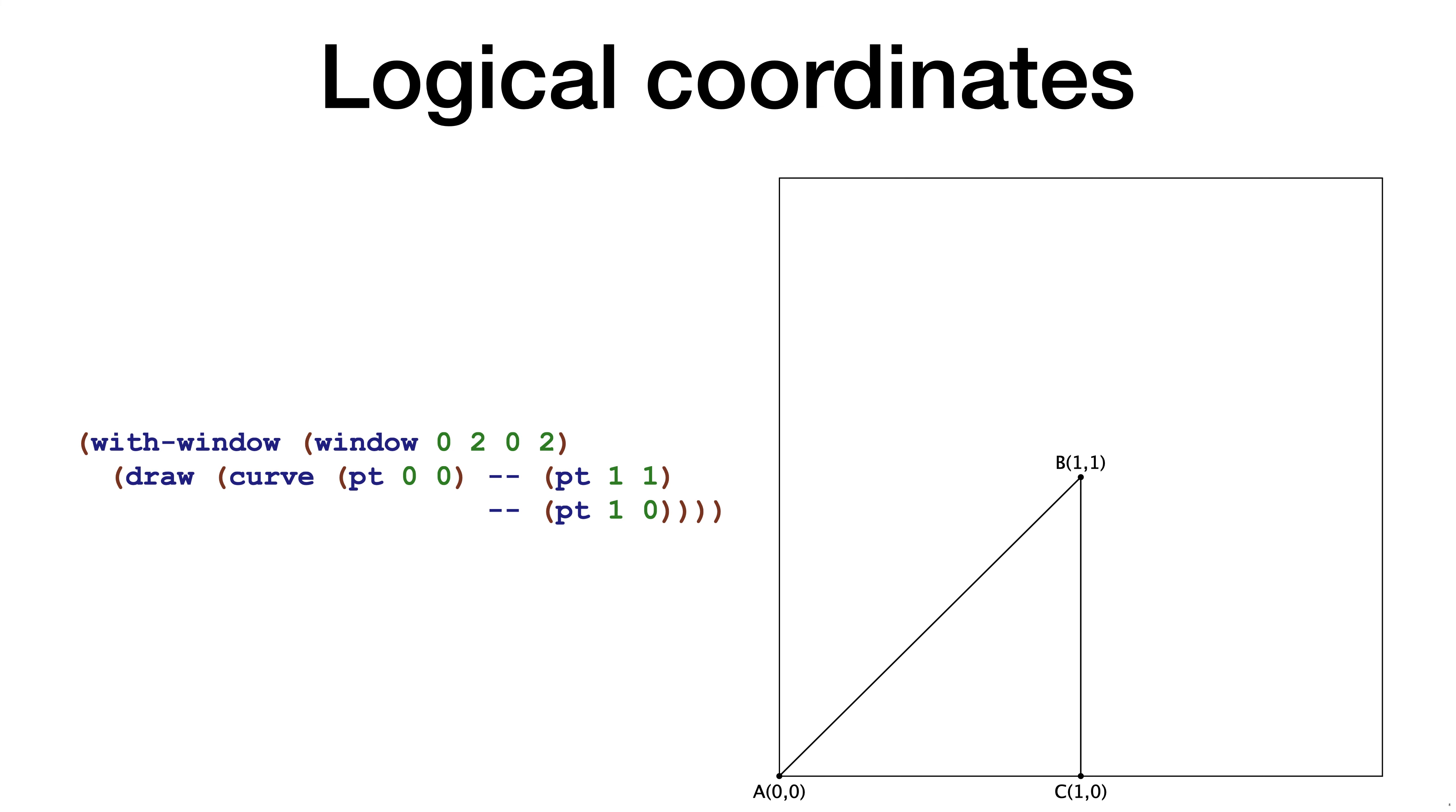Not all drawings fit in the square from minus 1 to 1 on the x-axis and from minus 1 to 1 on the y-axis. The form with-window allows you to use a different window. In this example, the x range goes from 0 to 2 and the y range from 0 to 2. The actual curve is drawn from the same points, but due to the different window, the placement of the curve is different.